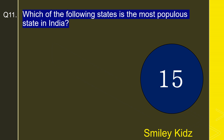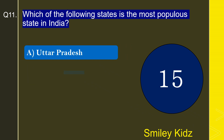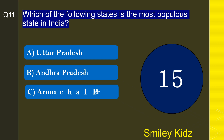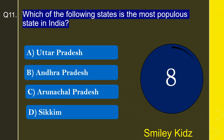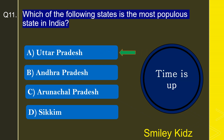Moving to question number 11: Which of the following states is the most populous state in India? Options are Uttar Pradesh, Andhra Pradesh, Arunachal Pradesh, or Sikkim. The correct answer is Uttar Pradesh. Uttar Pradesh is the most populous state in India.